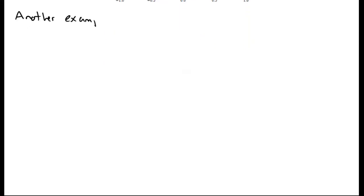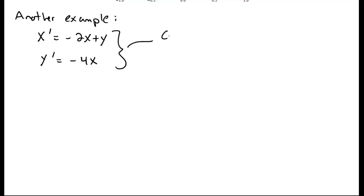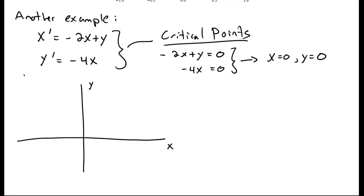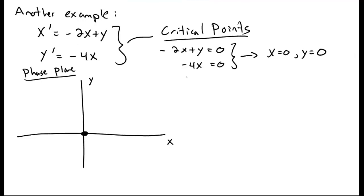Let's look at another example: x' = -2x + y and y' = -4x. Again, we study the critical points of this system by setting x' and y' equal to 0. This only happens at x = 0 and y = 0. So again, we draw in our phase plane the critical point at (0, 0).